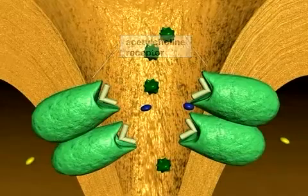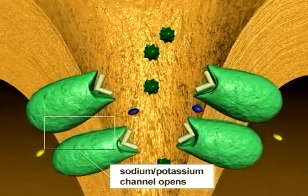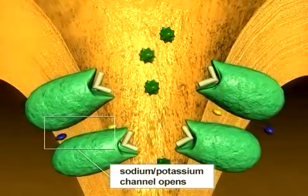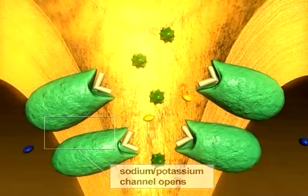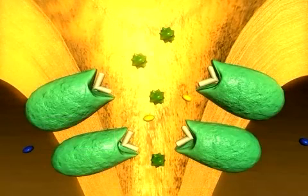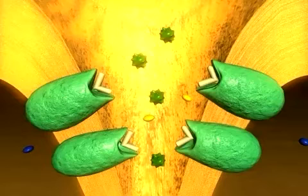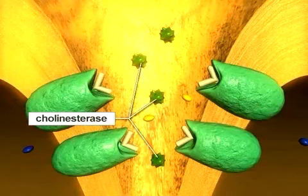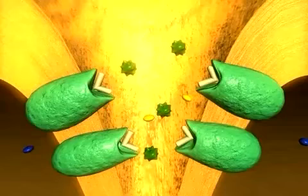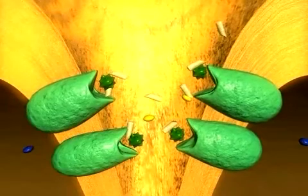Binding of acetylcholine to receptors immediately opens ion channels, allowing sodium ions to rush into the muscle fiber and potassium ions to diffuse out. Acetylcholine is then split to acetate and choline by cholinesterase, resulting in inactivation and closure of the channel.